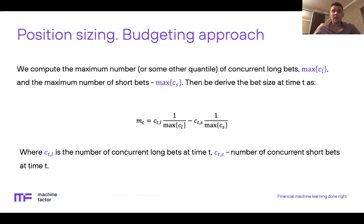To handle this, let's follow the position sizing budgeting approach suggested by Marcos Lopez de Prado. We compute the maximum number of concurrent long bets and the maximum number of short bets. At each point in time, the capital allocation to each signal is determined by: currently active long bets divided by the maximum number of concurrent long bets, minus the number of concurrent short bets divided by the maximum number of concurrent short bets. This ensures we never breach capital constraints by distributing capital based on currently active bets.